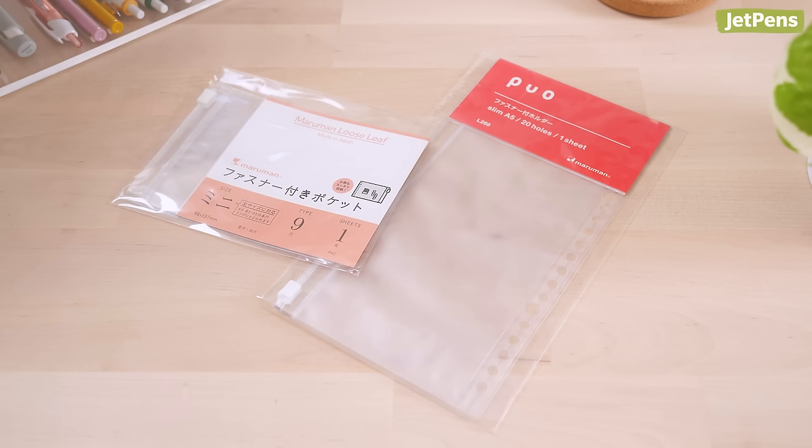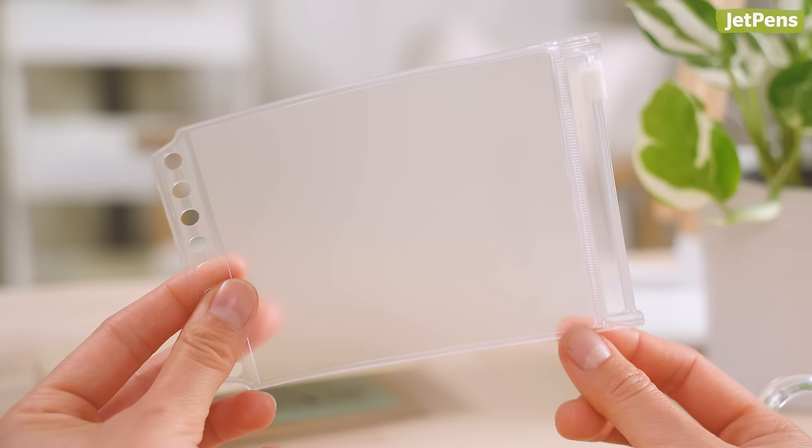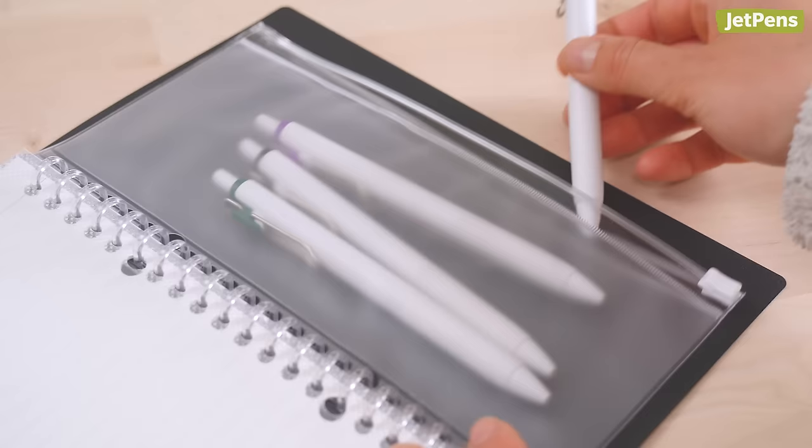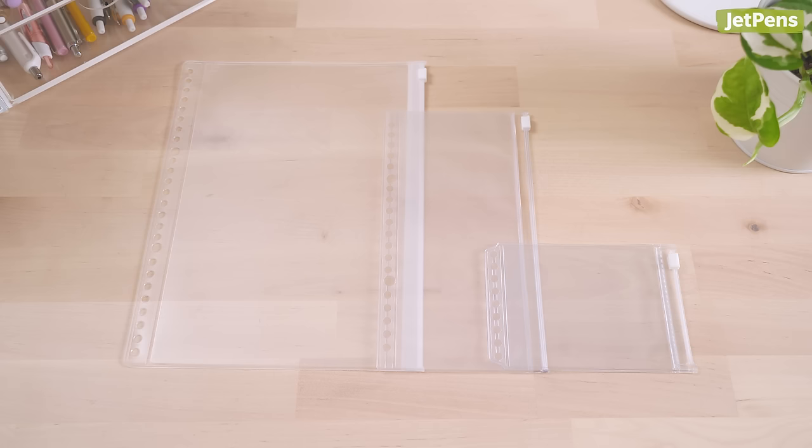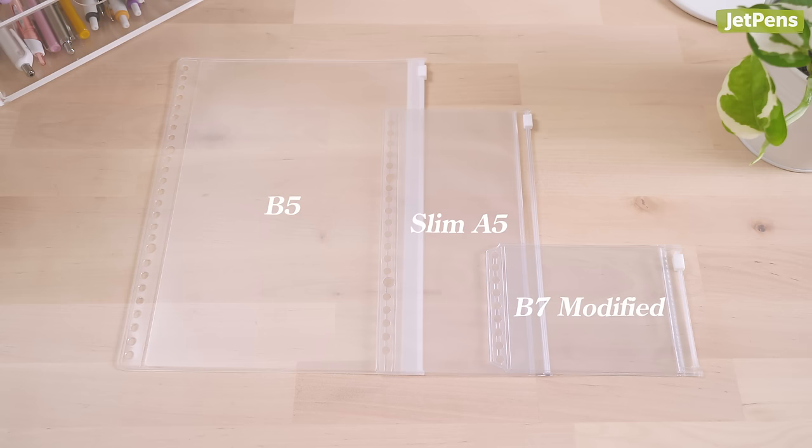Zipper pockets keep bulkier items, like pens, safe in your binder. They're sealed on three sides and have sturdy zipper closures, so they're more secure than sheet protectors. The zipper pockets are available in three sizes: B5, slim A5, and Mini B7 modified.